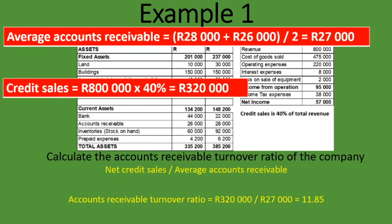What does 11.85 mean? The accounts receivable turnover ratio of 11.85 means that on average we collect cash from our debtors approximately 11 to 12 times in one year — that is the number of times we are collecting cash from our debtors. Like any other ratio in isolation, it does not give you enough information. It's good when it's comparable. In your question you may be given the accounts receivable turnover ratio of the previous year or the previous five years, so you can see the trend — are we collecting money from our debtors more times or less times?